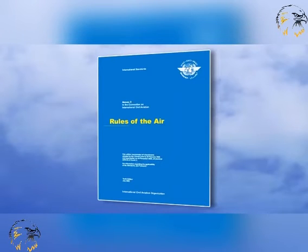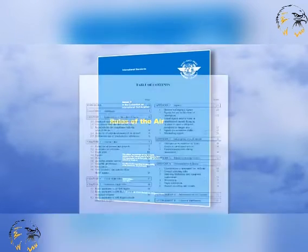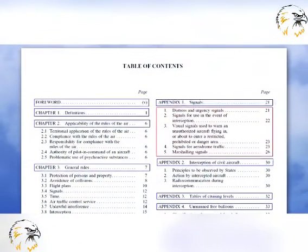In formulating such policies, States are to recognise that to ensure general safety in the air, any visual identification signals are to be made in accordance with Appendix 1 to Annex 2 of the Chicago Convention.